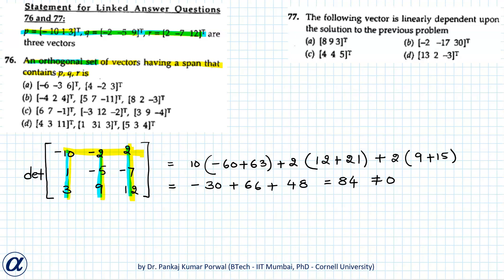When a three-dimensional vector space has three linearly independent vectors, the dimension is 3 and the basis must consist of three vectors. In question 76, we want to find an orthogonal basis. Three options have three vectors in the basis, but when we check them for orthogonality, none of those options have mutually orthogonal vectors. The only option with orthogonal vectors is option A, but it has only two vectors — and a three-dimensional space with three linearly independent vectors cannot be spanned by a two-vector basis. So the question is unsolvable as stated.